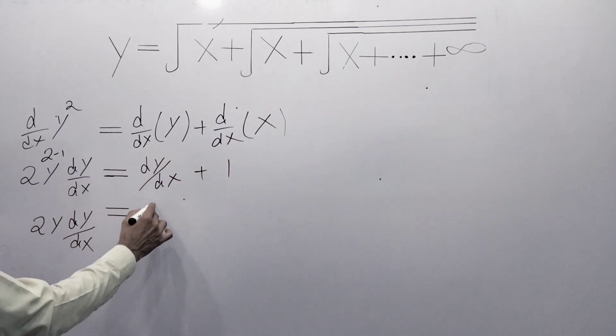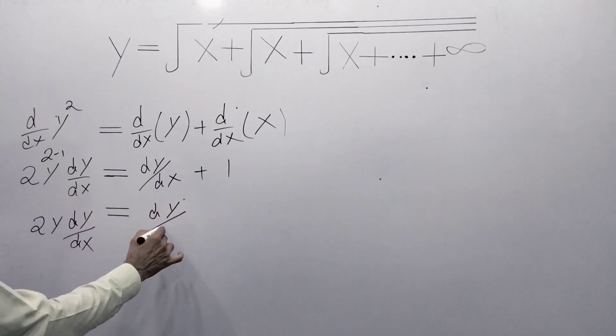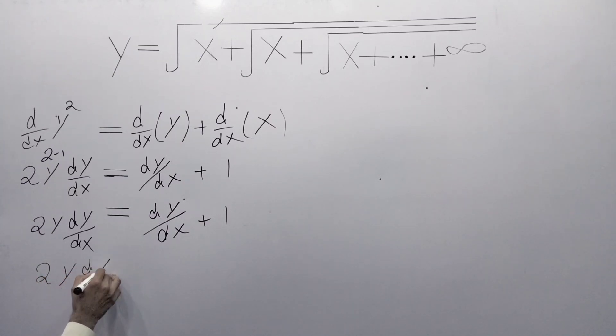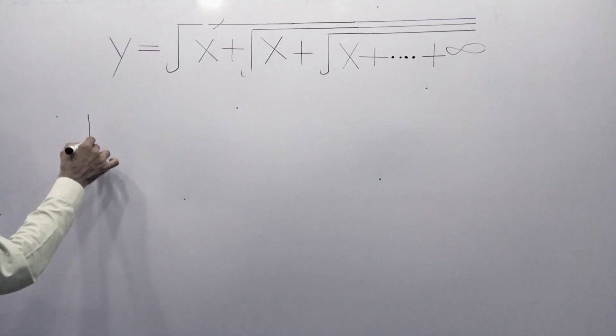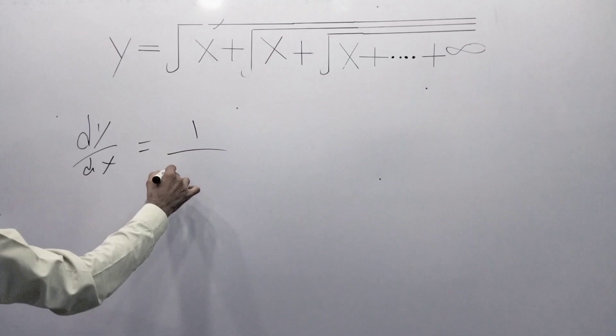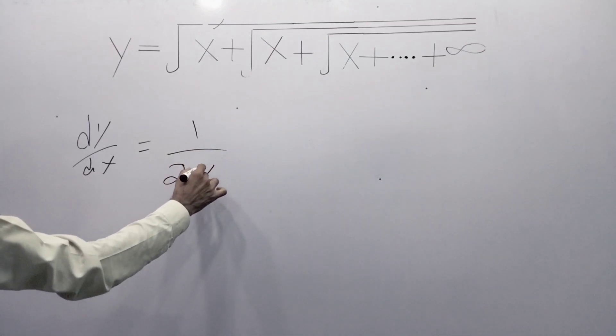And the derivative of x is 1. Now we have 2y times dy over dx equals dy over dx plus 1. Moving terms: 2y times dy over dx minus dy over dx equals 1. Now take dy over dx as a common factor. We will get 2y minus 1 times dy over dx equals 1. Now dy over dx is equal to 1 over 2y minus 1.